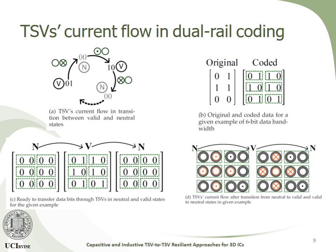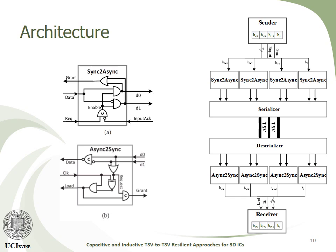However, dual rail coding comes at an additional cost: each bit is translated into two bits, leading to 100% overhead. To compensate for this, we propose using an asynchronous architecture to exploit the high efficiency of TSVs and to encode each four bits of the synchronous domain into three bits in the asynchronous domain.